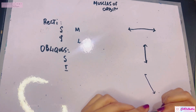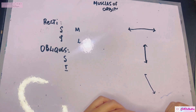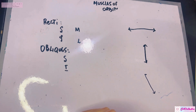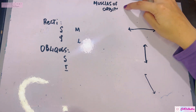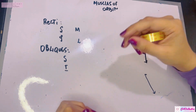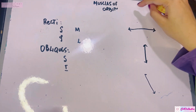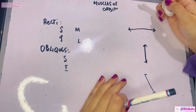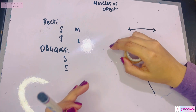Assalamu alaikum, this is Dr. Hasna with Hasna's Anatomy, and today we're discussing the muscles of the orbit. We've already discussed the orbital boundaries and contents of the orbit, and today we're going to focus on the muscles that exist within the orbit and the eye movements they cause. The overall muscles are voluntary and involuntary muscles of the orbit.